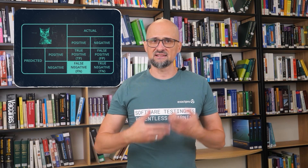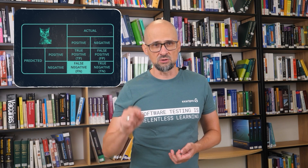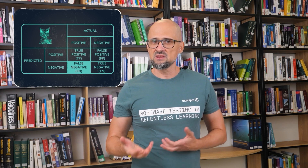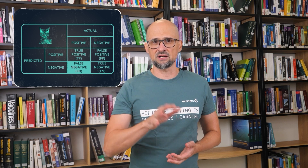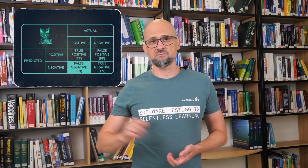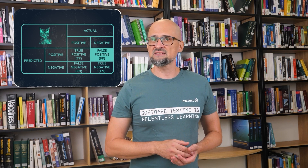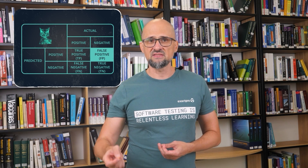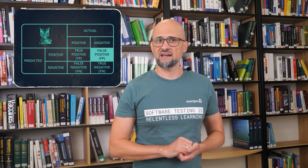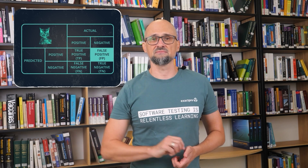False negative is the number of objects that the model does not assign to the class, but they do in fact belong to it. For example, the model predicts that the text is not a bug description, but in fact it is a bug description. And the last one is false positive — this is the number of objects the model assigns to a given class, but in fact they do not belong to it. That is, the model says the text is a bug description, but in fact it is not.